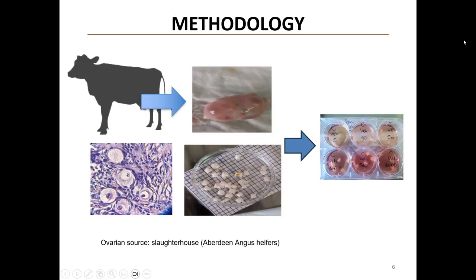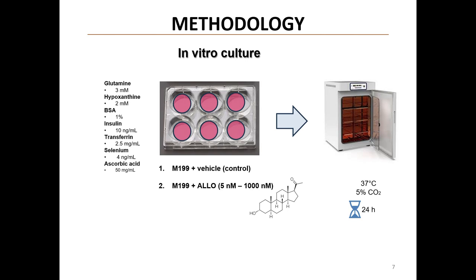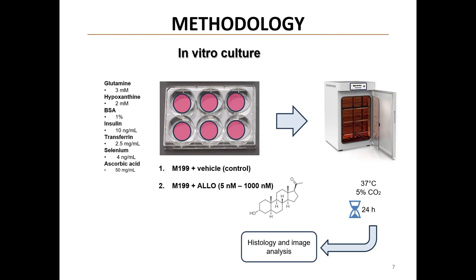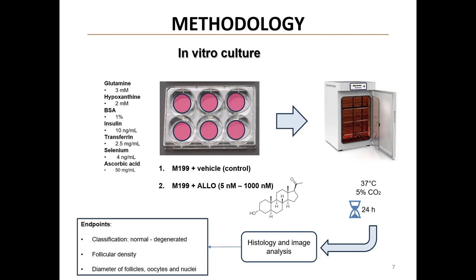To study this, we used in vitro culture of bovine preantral follicles enclosed in ovarian cortical tissue. We obtained ovarian tissue from Slaughter Aberdeen-Angus heifers and cultured their preantral follicles in a modified tissue culture medium containing different concentrations of Allo ranging from 5 nM to 1000 nM. The control groups consisted of medium with vehicle concentrations of methanol, as Allo is diluted in it. After 24 hours of culture at 37°C with 5% carbon dioxide, we performed histological analysis to evaluate follicular density and measure the diameters of follicles, oocytes and nuclei.